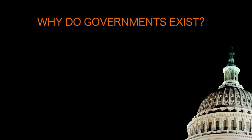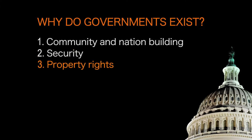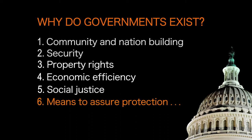Basically, there are six broad categories in which governments of states make choices about how they interact with their citizens: community and nation-building, security, property rights, economic efficiency, social justice, and means to assure protection. Let's take a look at each of those six things.